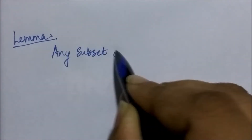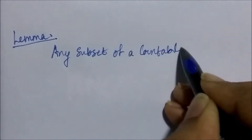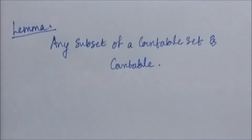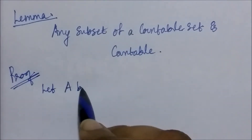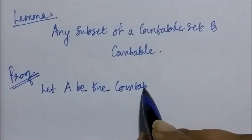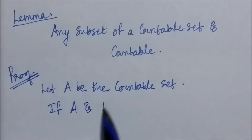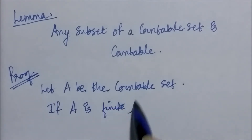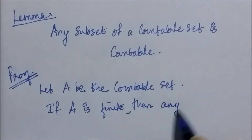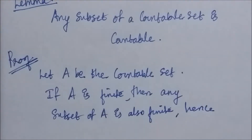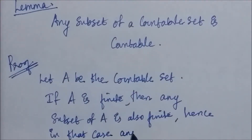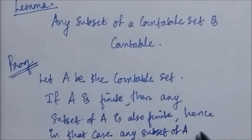Let's look at the statement once more: any subset of a countable set is countable. Let's begin the proof. Let A be the countable set. Now if A is a finite set, then any subset of A is also a finite set, and hence any subset of A is going to be a countable set, because a finite set is countable.